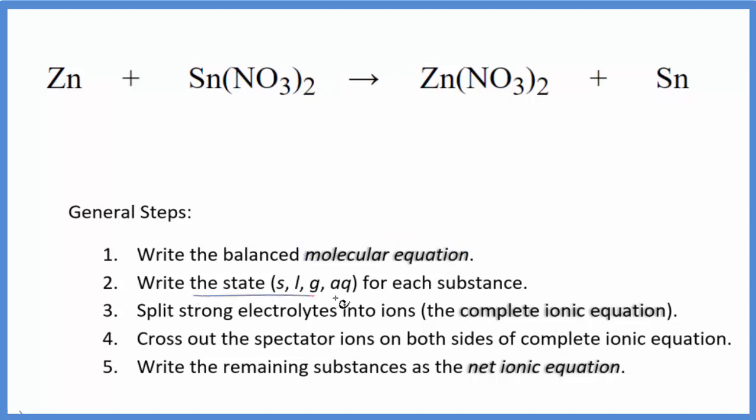Next, we write the states for each substance. Zinc, that's some metal, so we're going to call that S for solid. If you know your solubility rules, nitrates are very soluble, AQ, it's going to be aqueous, dissolved in water, splits apart into its ions. We have zinc nitrate over here, so that's going to be aqueous, and then we have just solid tin metal. So these are our states.